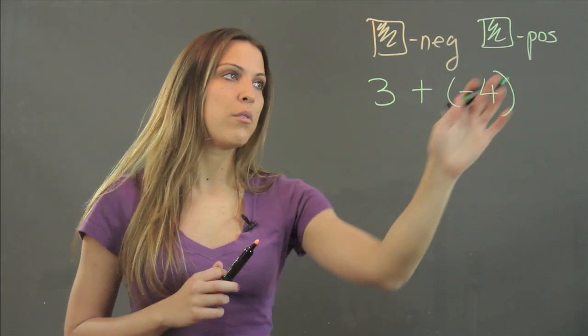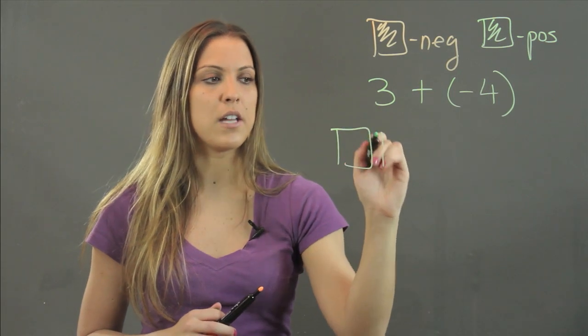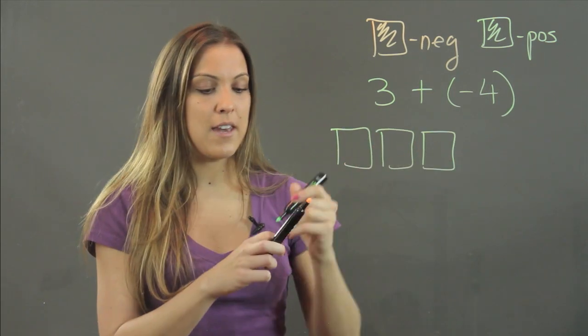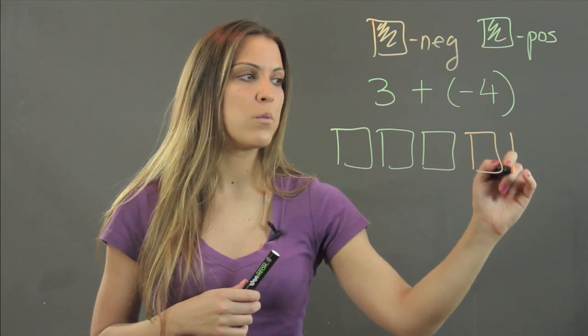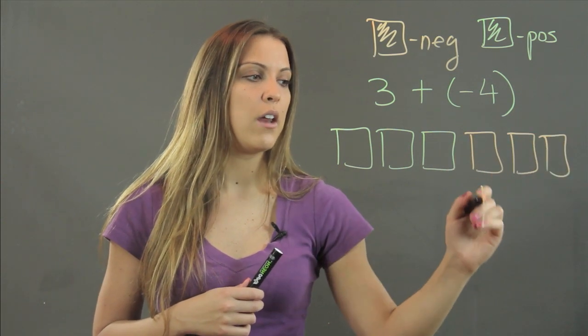So we're going to represent the positive three with three green color tiles, and we're going to represent the negative four with four orange color tiles. One, two, three, and four.